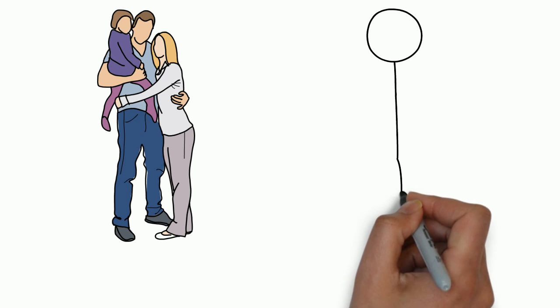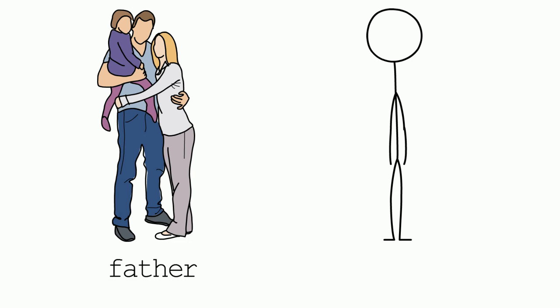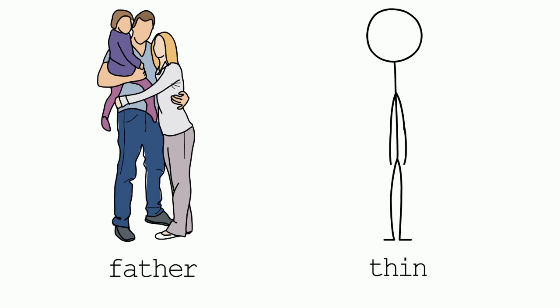Two of the most difficult sounds in the English language: TH. The words are father and thin. Chinese speakers often mispronounce these as 'fadder' or 'sin.' It's father, thin. Check out the lesson on the TH sound for more tips on how to make these sounds.